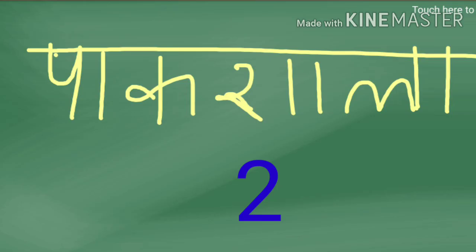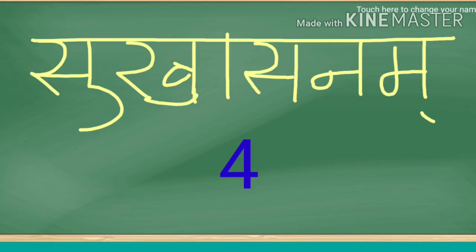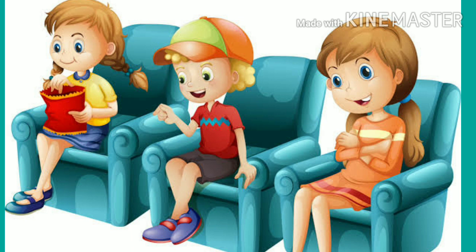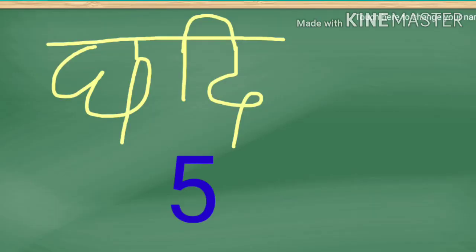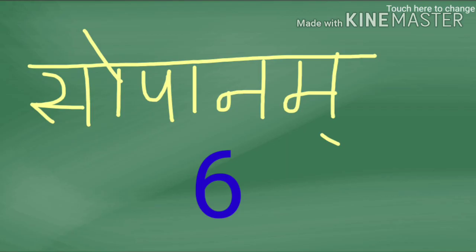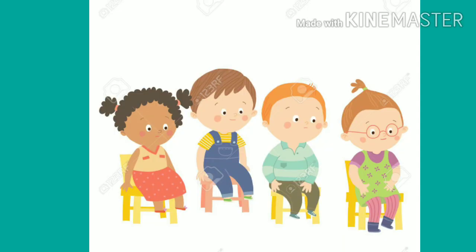The second word we learnt is Paakashala. The third is Pooja Griham — puja room. The next one is Sukasanam. In Tamil we use the word Sukam, which means comfortable, happy. Asanam means sitting, so Sukasanam means in the sofa we sit very comfortably. The next one is Chadi, meaning roof. And the next word is Sopanam, meaning steps. So we have learnt six new words in today's lesson — you should remember this.